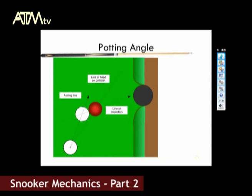Before we look at the potting angle, we need to define a few terms. The line of head-on collision, shown by the yellow line, is the line joining the centre between the cue ball and the object ball. The orange line is the line of projection — it is the intended line which the object ball takes to pot.